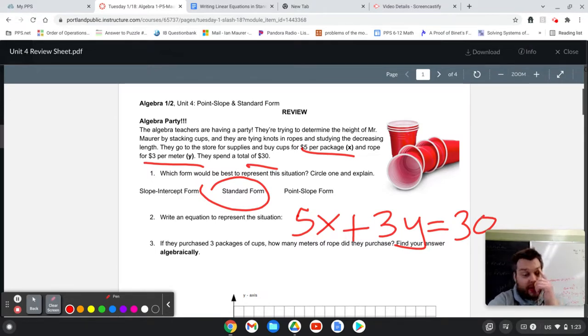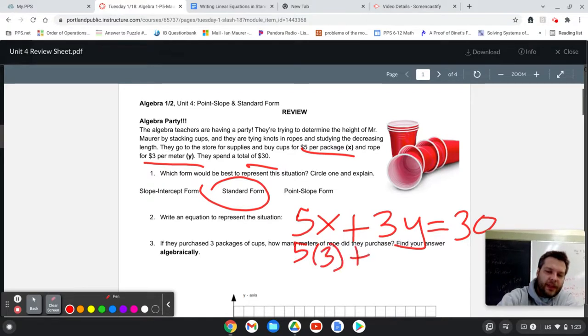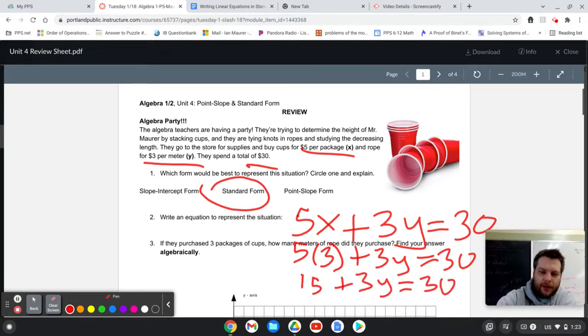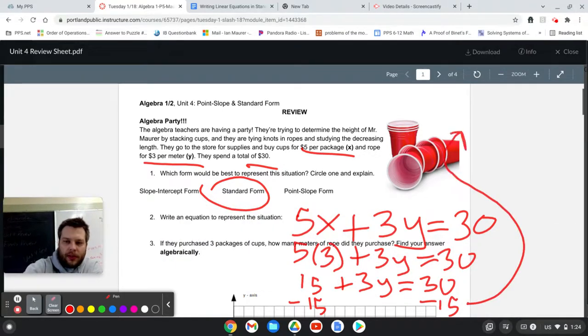If you look at question 3, it says that they purchased three packages of cups, which means that the x value is now equal to three. And so I replace the x with three and write the rest of the equation as is. And I solve for y. This should feel very familiar. This is the sort of equation we spent a long time practicing back in unit two. So I'm going to subtract 15 from both sides, leaving me with 3y is equal to 15 and dividing by three.